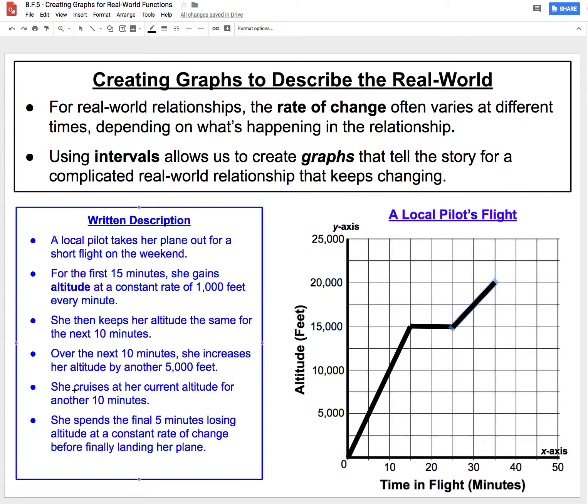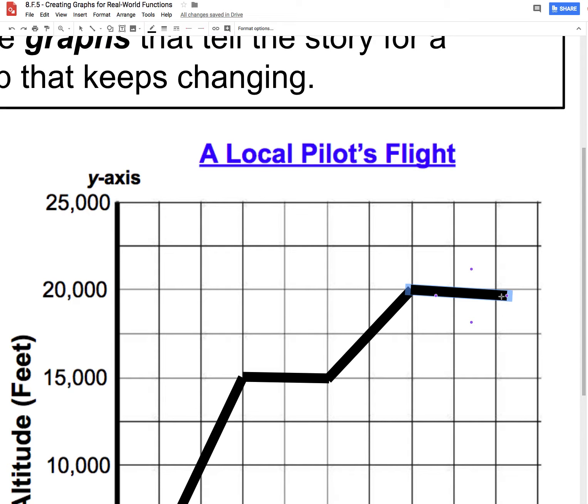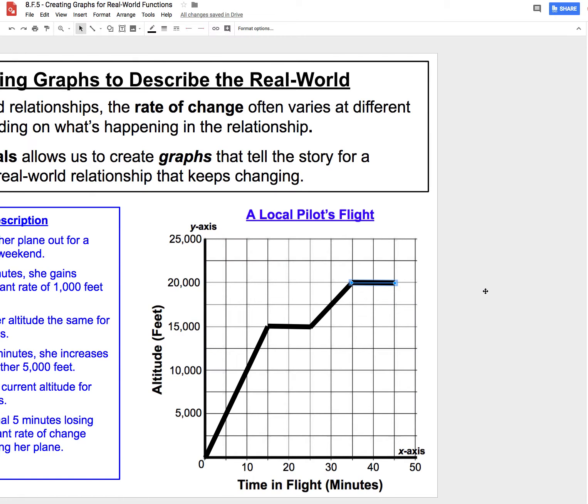We're told for the next 10 minutes, she's going to cruise at that current maximum altitude of 20,000 feet. So again, we're going to create a line here for 10 minutes. I'm going to zoom in on the graph by holding CTRL, ALT, and PLUS. And now I can position that correctly and show that for 10 minutes, she had a constant rate of change.